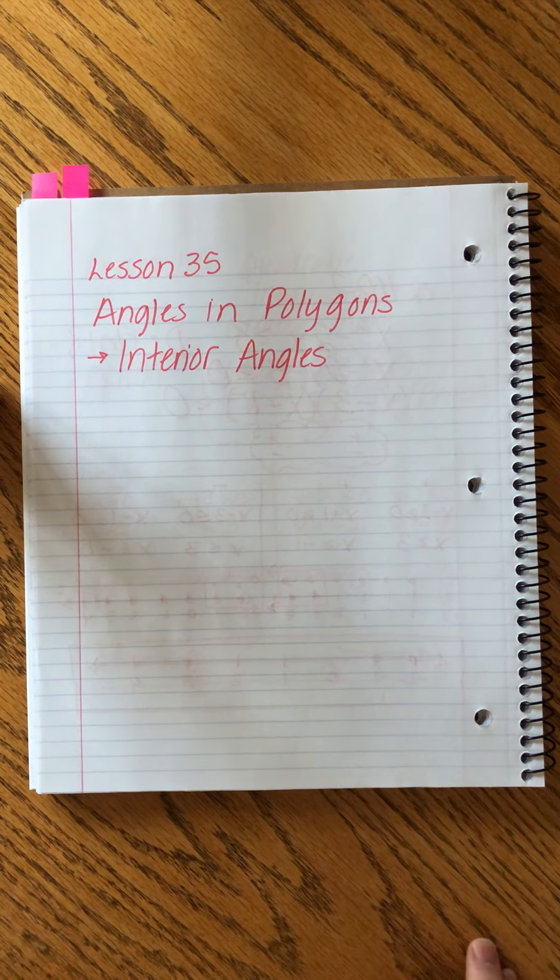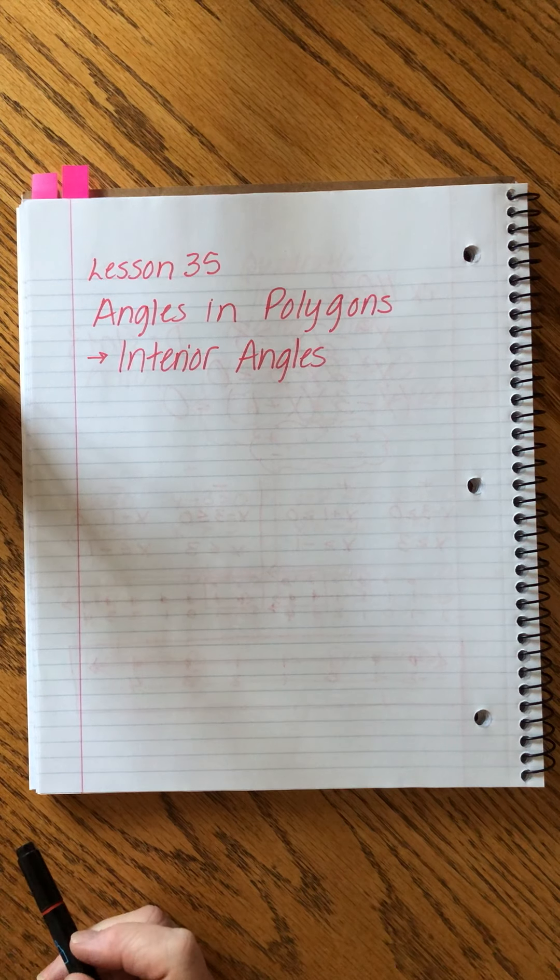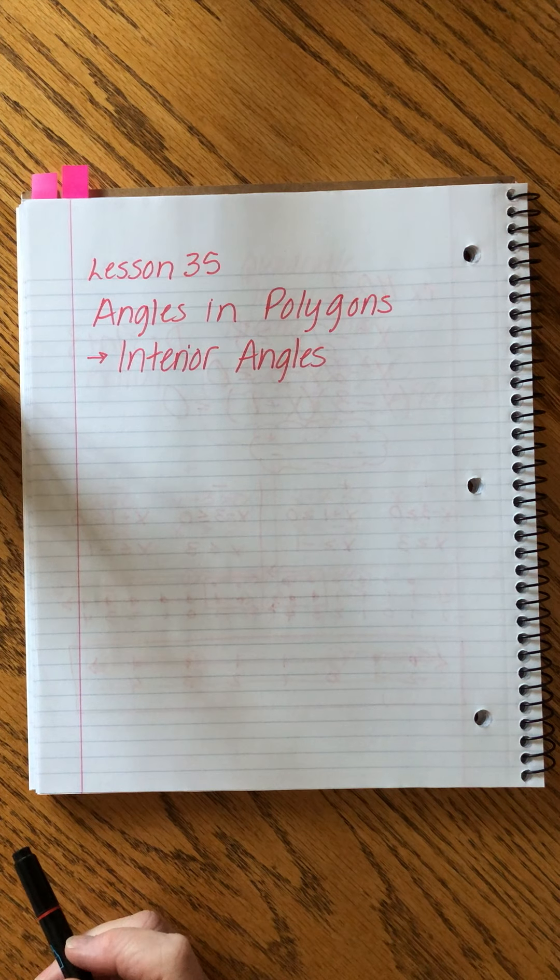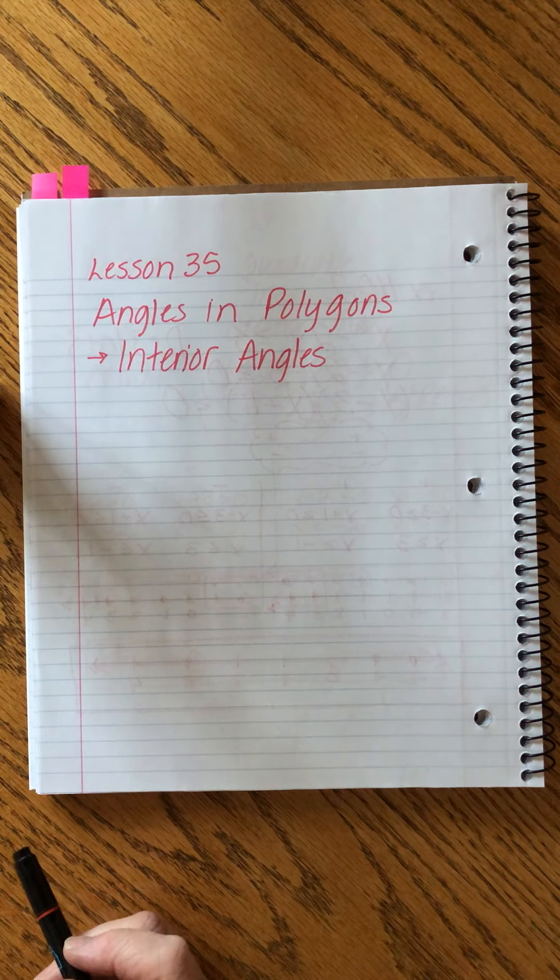Saxon Algebra 2, Lesson 35. Greetings my students. We're going to have a three-parter in this lesson. The first two are about geometry and they're pretty straightforward, and then the third one is a little algebra topic.